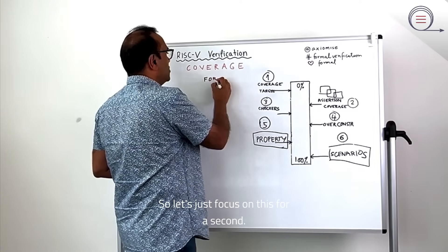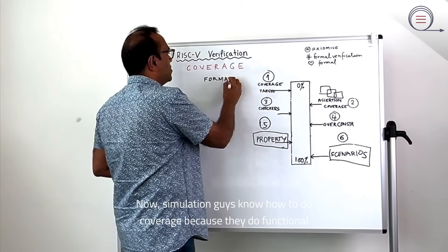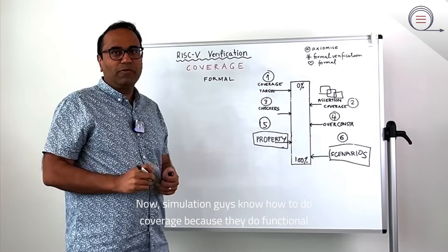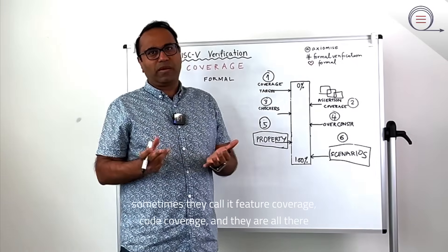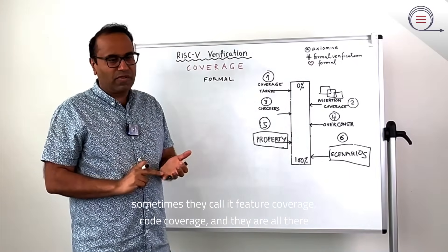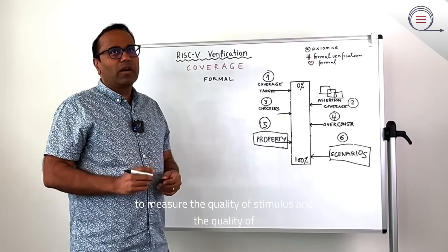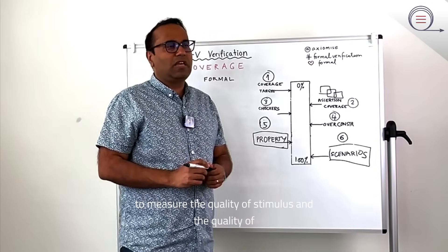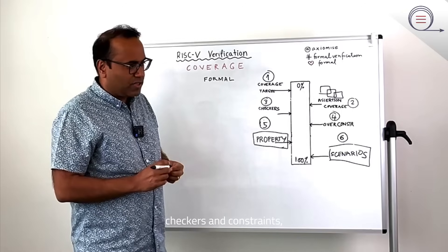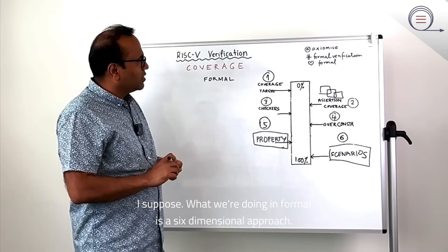Let's just focus on this for a second. Now simulation guys know how to do coverage because they do functional coverage. Sometimes they call it feature coverage, code coverage, and they are all there to measure the quality of stimulus and the quality of checkers and constraints.